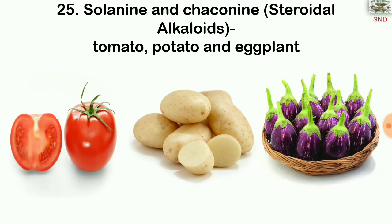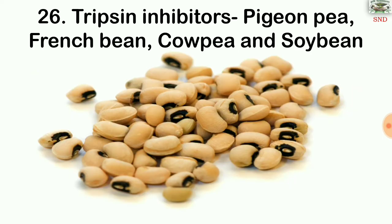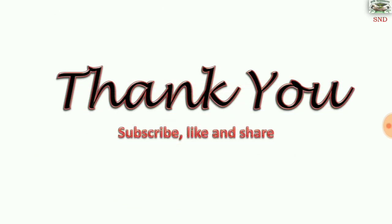Solanine and chaconine are steroidal alkaloids present in tomato, potato, and eggplant. Trypsin inhibitors are present in pigeon pea, French bean, cowpea, and soybean. These were all the toxins present in plants. Thank you.